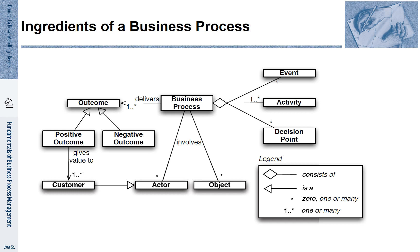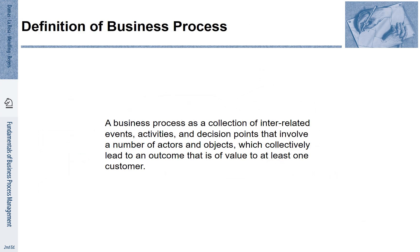A business process also involves different actors and objects, as seen in the division of labor discussion. A business process is typically subdivided into different activities, referring to different events and decision points, and the different actors are responsible for conducting those activities. We can define a business process as a collection of interrelated events, activities, and decision points, involving a number of actors and objects, which collectively lead to an outcome that is of value to at least one customer.